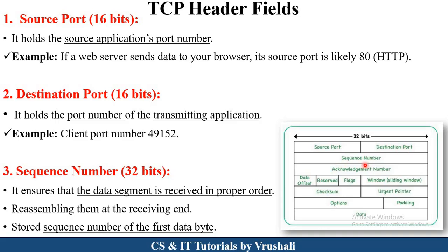The next field is the sequence number. The length of the sequence number is 32 bits. As we discussed earlier in the transport layer, a large file is divided into smaller pieces which are called segments. Every segment has a sequence number, and through that sequence number the file is sent to the receiver. The receiver receives those segments and reassembles all of them in proper sequential order. The sequence number stores the first data byte of every particular segment.